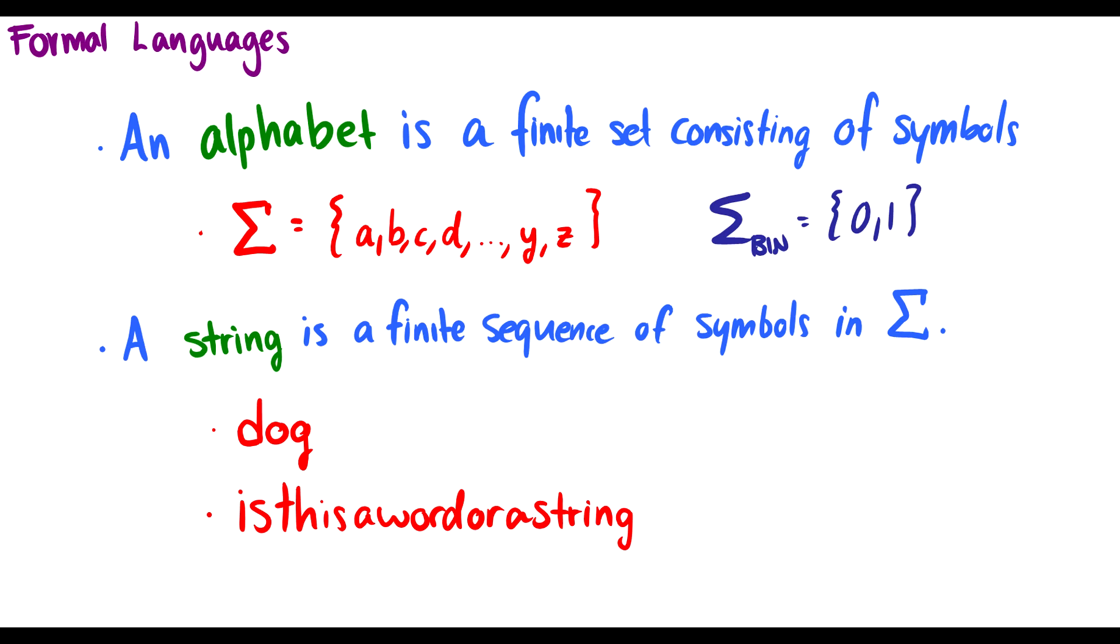A string is going to be a finite sequence of symbols in sigma. For instance, I can have the string D-O-G, which happens to spell dog, or I could have the string I-S-T-H-I-S-A-W-O-R-D-O-R-A-S-T-R-I-N-G, which coincidentally happens to spell a sentence. It's purely coincidence. I just took a random string of symbols.